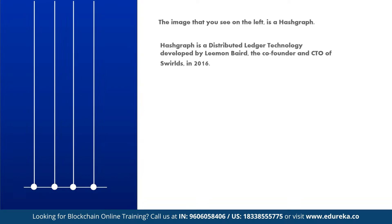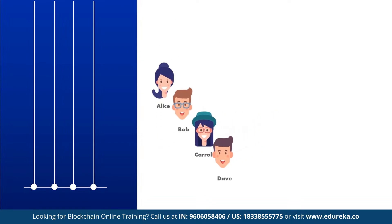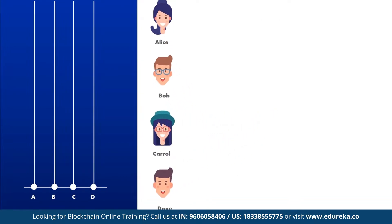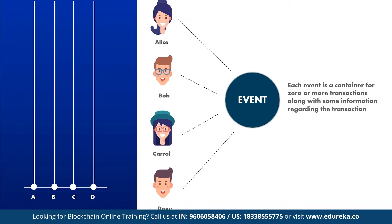A hashgraph has members. Our members here are Alice, Bob, Carol, and Dave, and they're represented by the four lines going upwards on the left hand side. These members are represented by A, B, C, D below each line. Each member starts by creating an event, which is a small data structure in memory represented on the diagram by a white circle. Each event is a container for zero or more transactions.